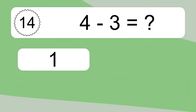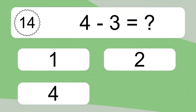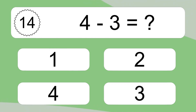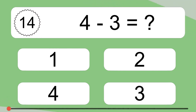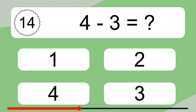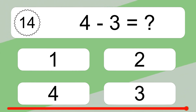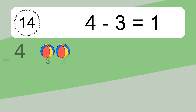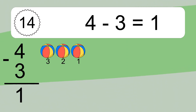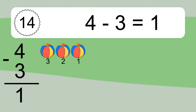4 minus 3 equals what? 4 minus 3 equals 1. Let's count it: 3, 2, 1.